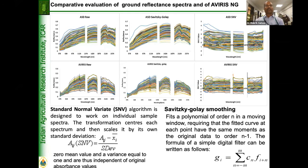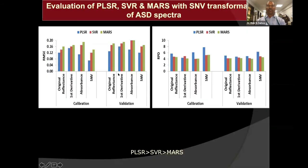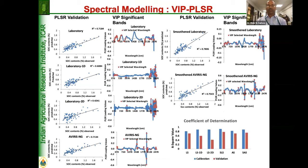Coming back to AVIRIS-NG: this is the raw airborne data alongside ground spectroradiometer data, and this is the AVIRIS-NG airborne data. Going through pre-processing, you can see the modeling we try to do and evaluate. PLSR looks to be better than support vector machine or other models for the different parameters we look at. To mine sensitive bands, we use variable importance in projection (VIP) along with PLSR and model that. Mathematically transforming spectral data using first and second derivatives — the result shows that raw reflectance data performs better than derivatives, with good R-squared values for both ground and airborne pre-processed data.